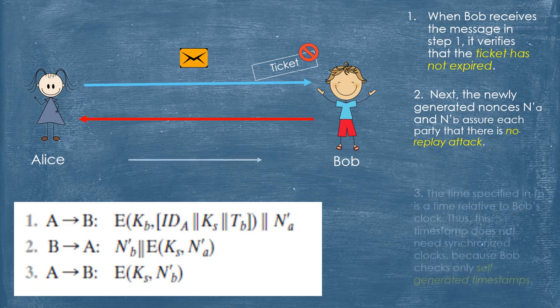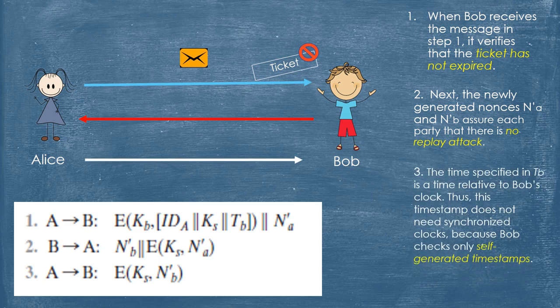Step 3: The time specified in TAB is a time relative to Bob's clock. Thus, this timestamp does not require synchronized clocks, because Bob checks only self-generated timestamps.